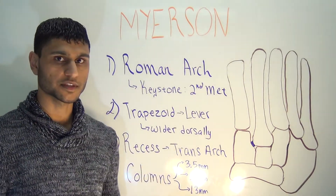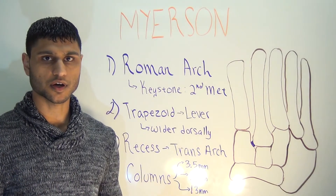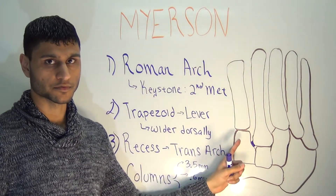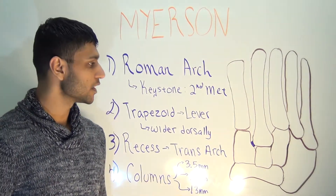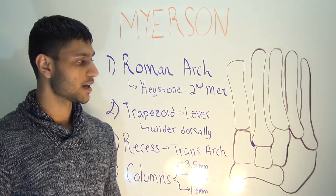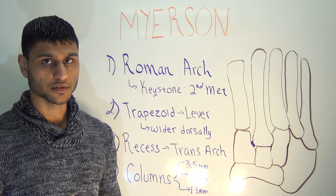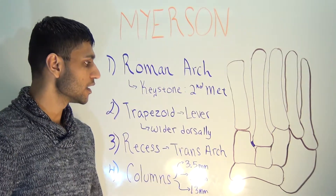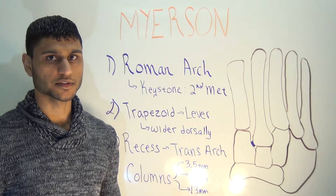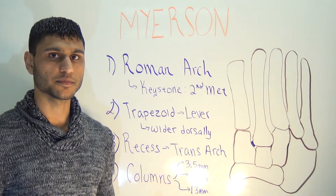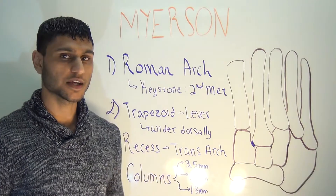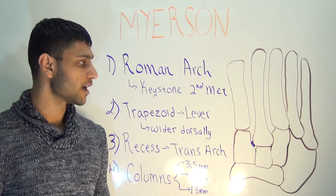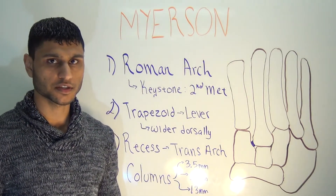The Lisfranc joint complex is divided into three functional units, or columns. The medial column is the first metatarsal and the first cuneiform. The middle column is the second and third metatarsals and the second and third cuneiforms. The lateral column is the fourth and fifth metatarsals and their articulation with the cuboid. The middle column has the least movement — about 0.6 millimeters in the sagittal plane — whereas the lateral column has the most, about 13 to 14 millimeters in the sagittal plane, and also has movement in pronation and supination.